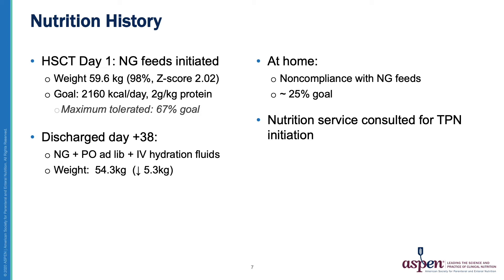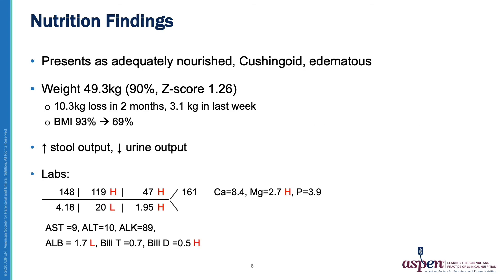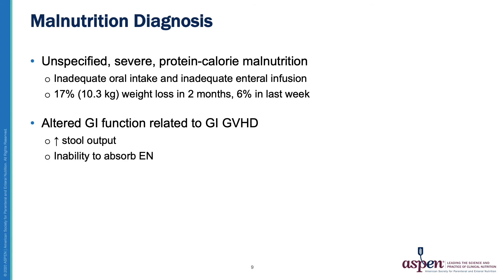Upon this admission, the Clinical Nutrition Service was consulted for initiation of TPN. On examination, the nutrition team noted that the patient appeared adequately nourished, cushingoid, and edematous, which could be masking signs of malnutrition. His weight was 49.3 kilos, which represented a weight loss of 10.3 kilos in two months and 3.1 kilos in the last week. He had markedly increased stool output in excess of 1.2 liters per day, as well as decreased urine output. His overall picture was suggestive of acute kidney injury, likely secondary to dehydration, and a hyperchloremic metabolic acidosis, likely due to excessive intestinal anion losses. The nutrition team's diagnosis was unspecified severe protein-calorie malnutrition, as well as altered GI function related to GI-GVHD.